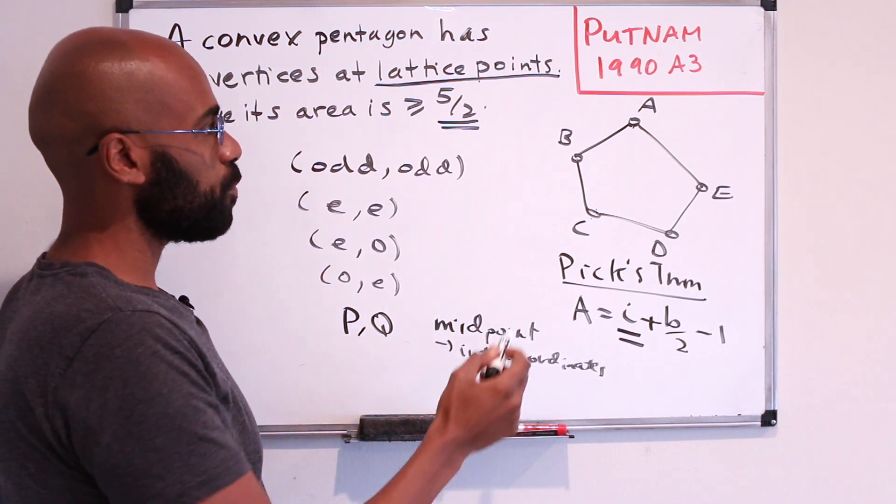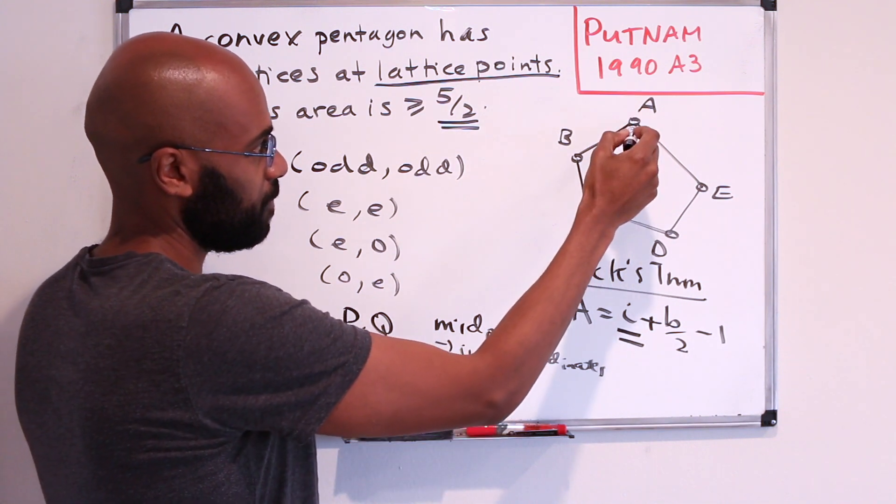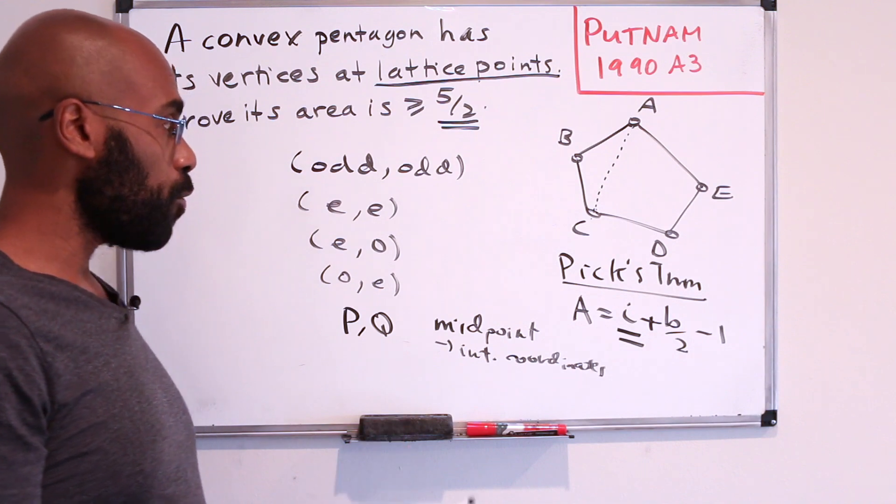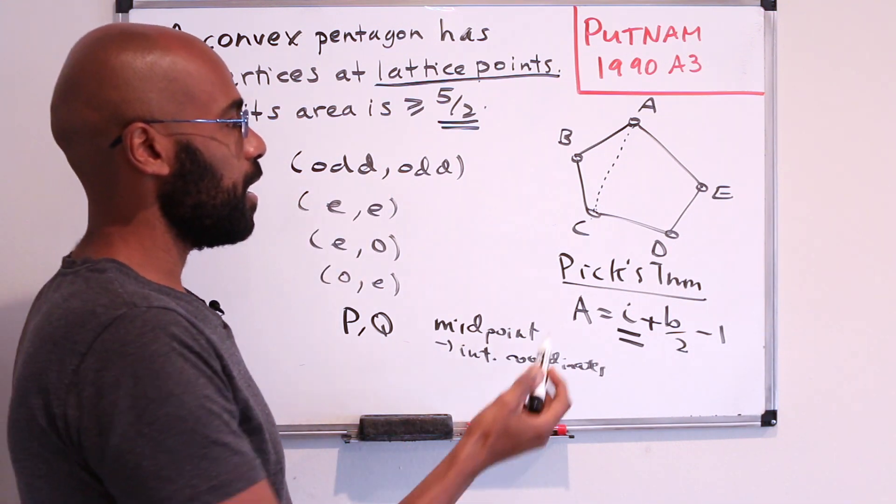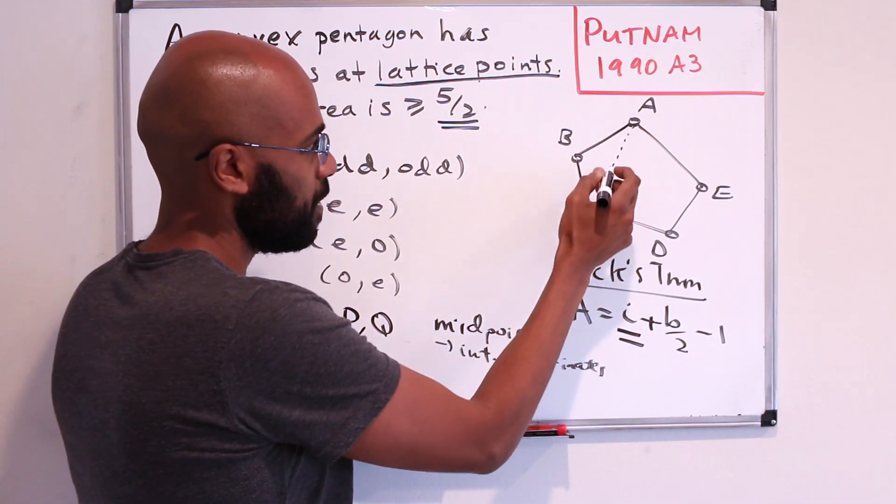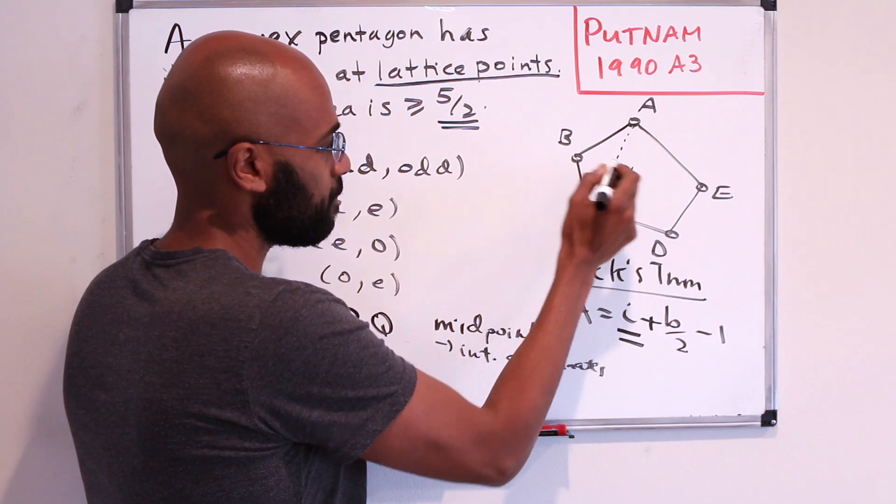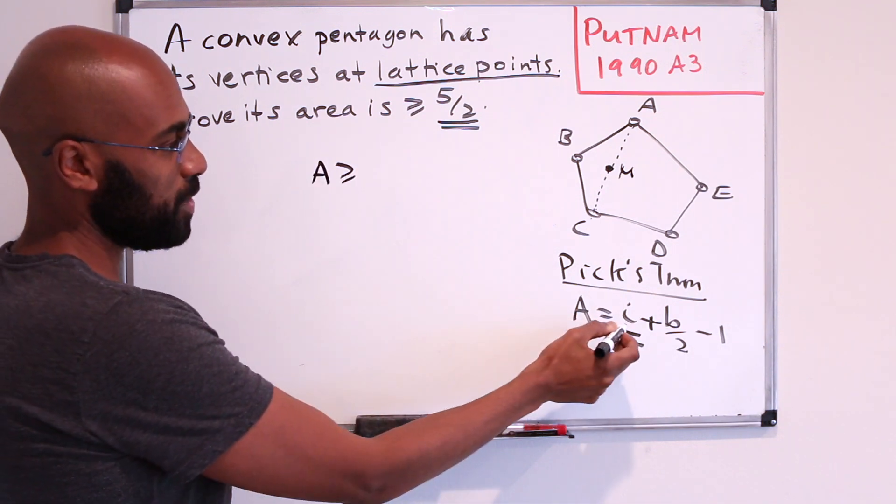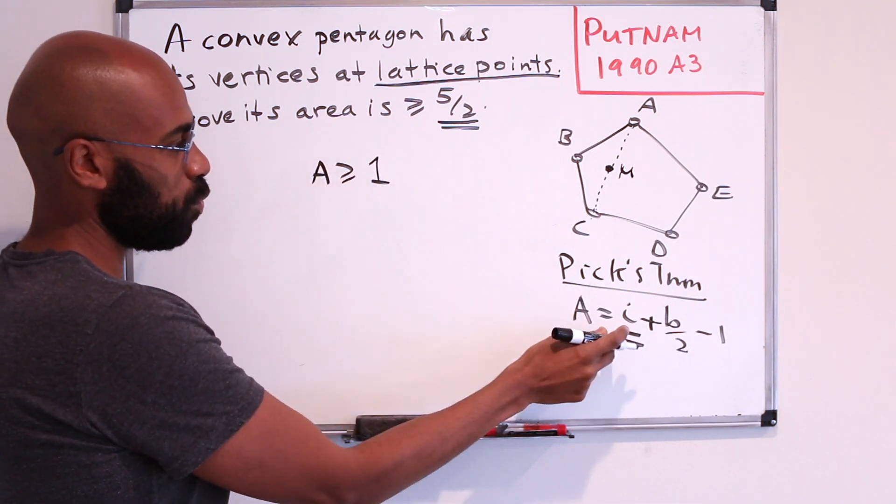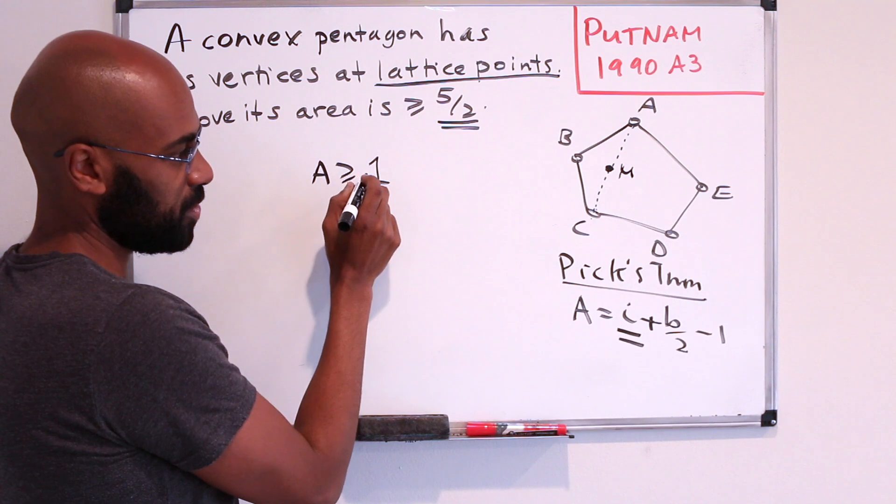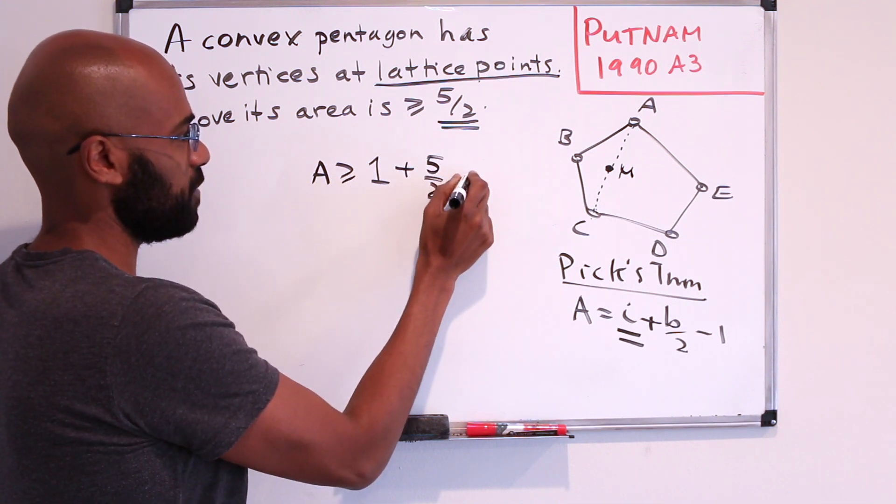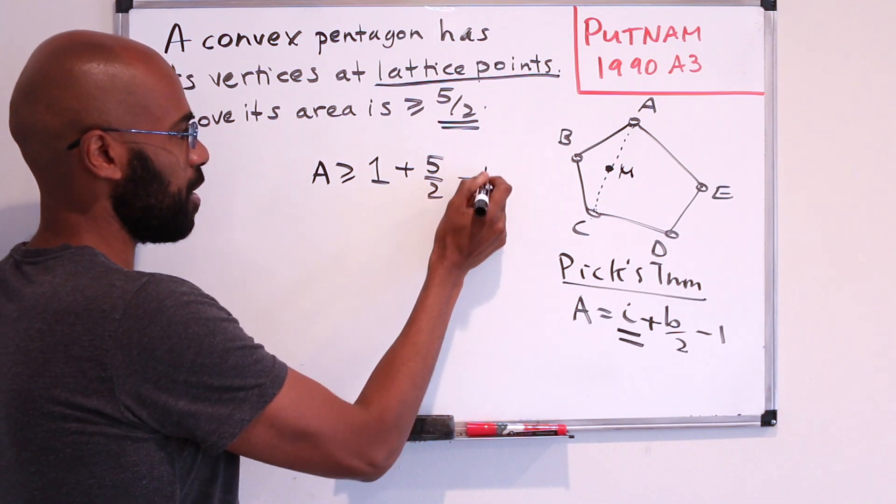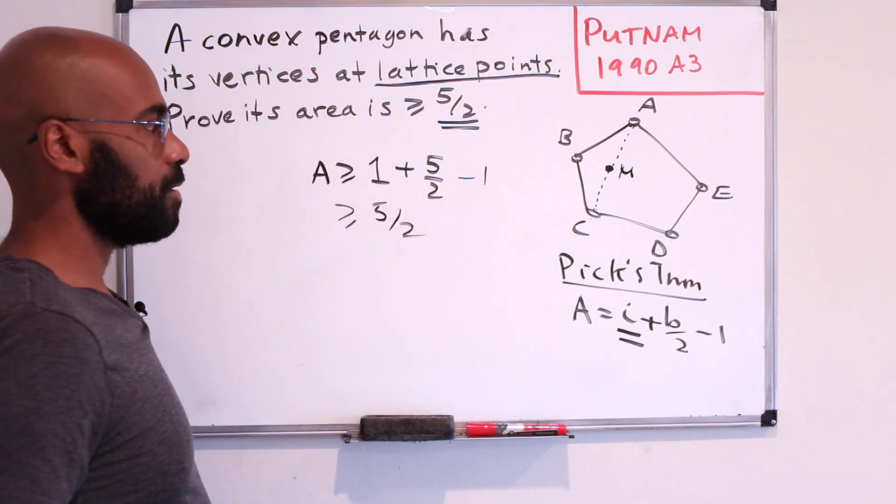Let's say that these two points were sort of across a diagonal. So let's say the two points, or two points that have the same parity in both coordinates, are a and c. Then the midpoint lies right over here. And as a consequence, we're happy because our area will be at least this one, because we have this one interior point, plus the five boundary points divided by two minus one, which gives us our area bound. Awesome.